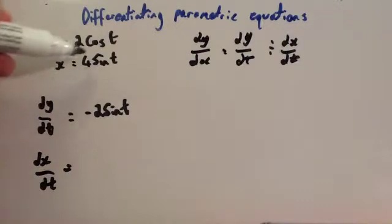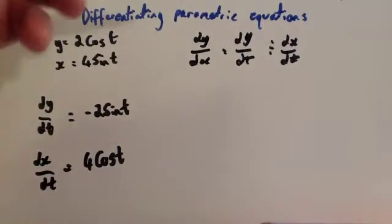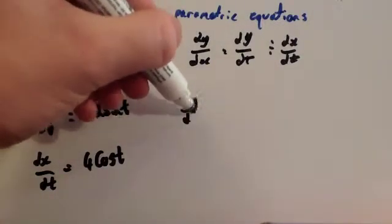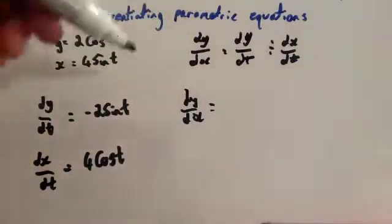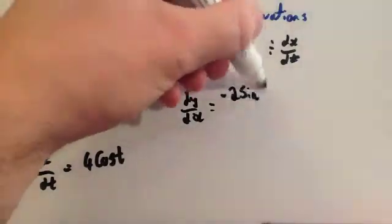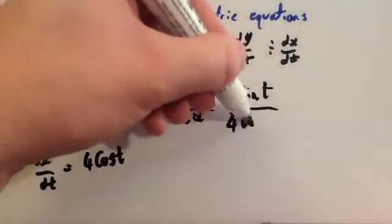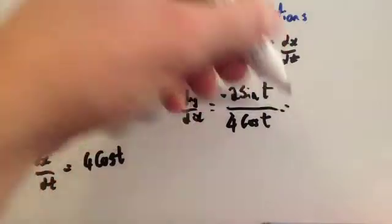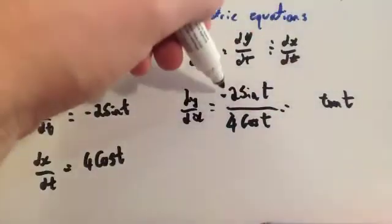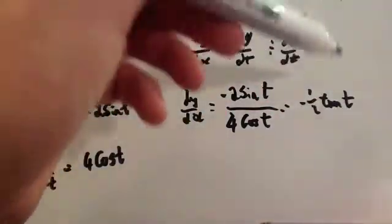The differential of x — the differential of sin is cos — so dx/dt gives you 4cos(t). So dy/dx equals dy/dt which is minus 2sin(t) over dx/dt which is 4cos(t). Since sin divided by cos is tan, and minus 2 divided by 4 is minus a half, your answer is minus a half tan(t).